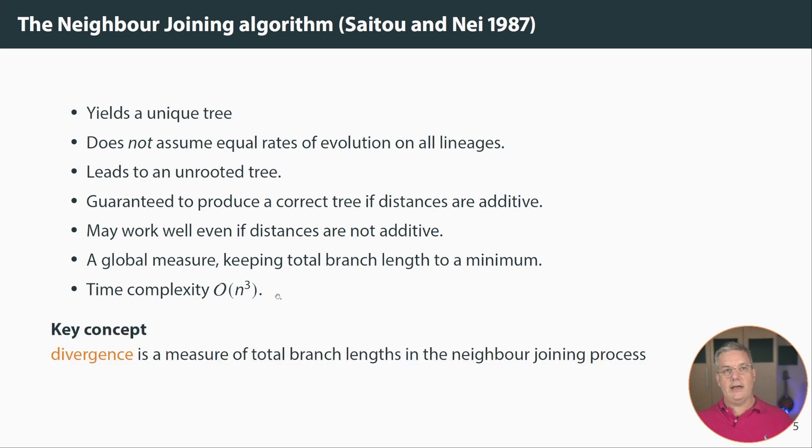Now a key concept in this is this concept of divergence. So the divergence is a measure of total branch links in the process of neighbor joining and we use it when we walk through an example.